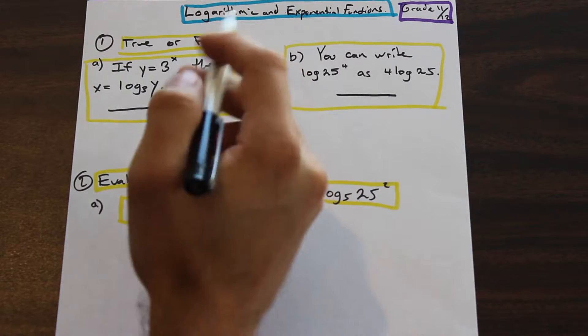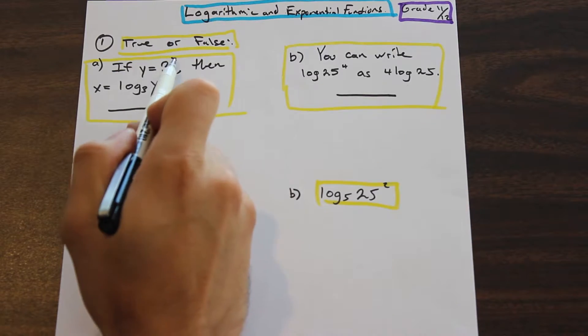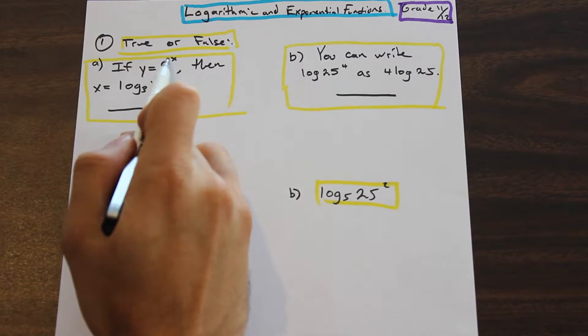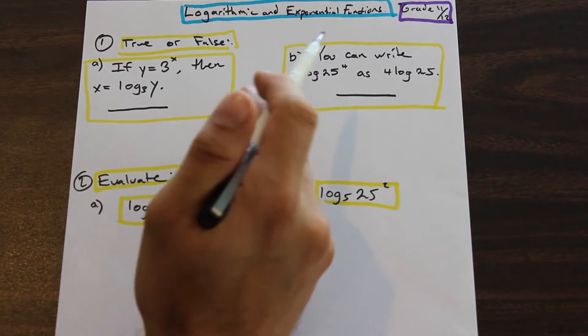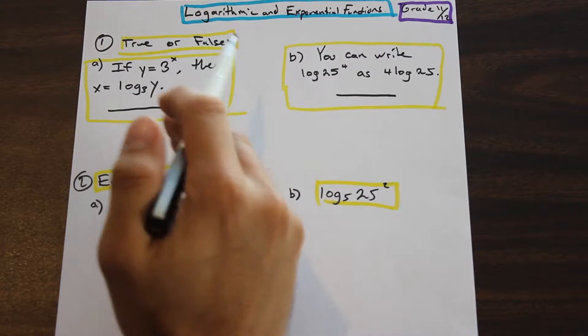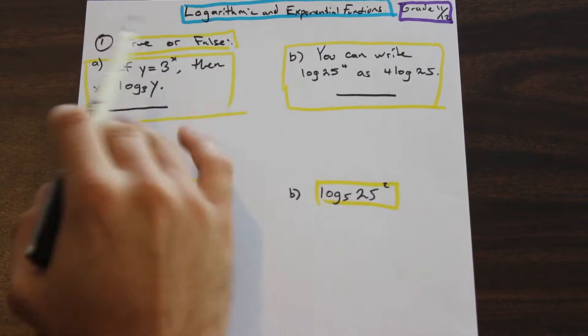So if you ever get exponential functions like this, they can be tricky to solve because you have the x in the exponent. And this is where log comes in handy - you can take that exponential, the x in the exponent, and bring it down into the equation into something that you can solve more easily.